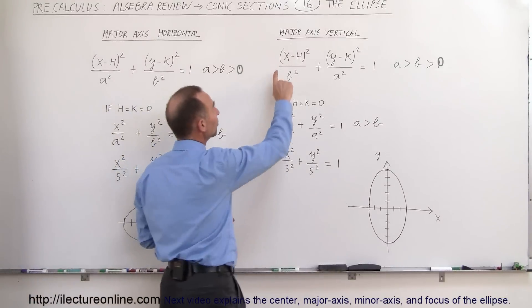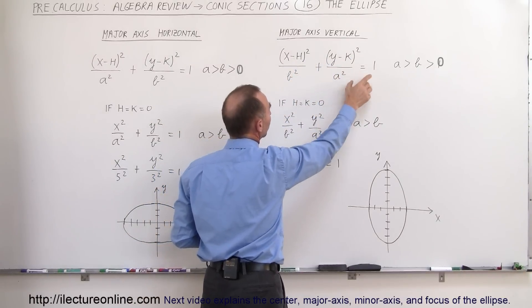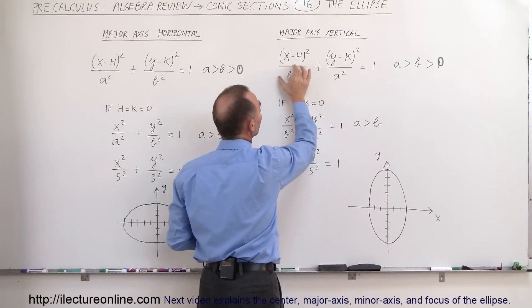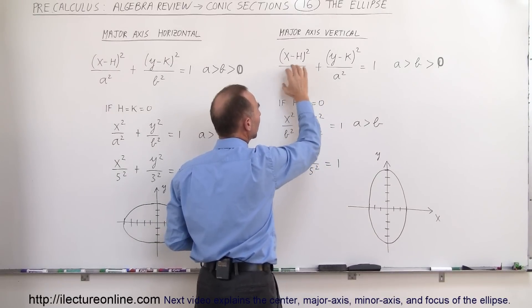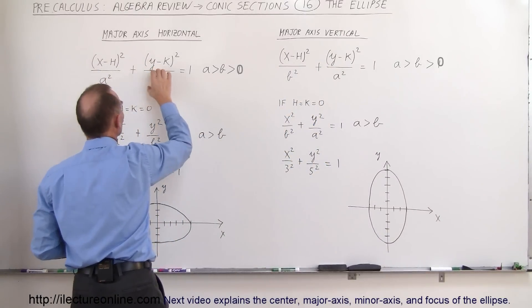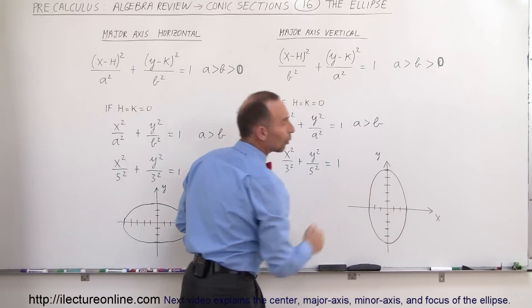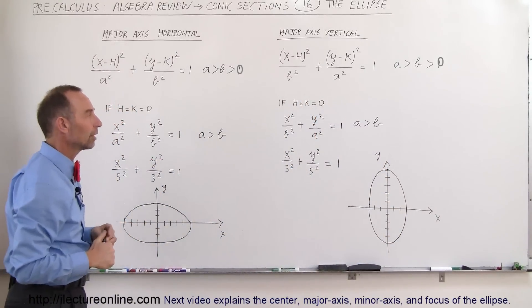Over here you can see (x-h)²/b² + (y-k)²/a² = 1. Again, a is bigger than b so here x has a smaller denominator, y has a bigger denominator, here x has a bigger denominator, y has a smaller denominator which causes the ellipse to be vertically oriented like that. The major axis is vertically oriented.